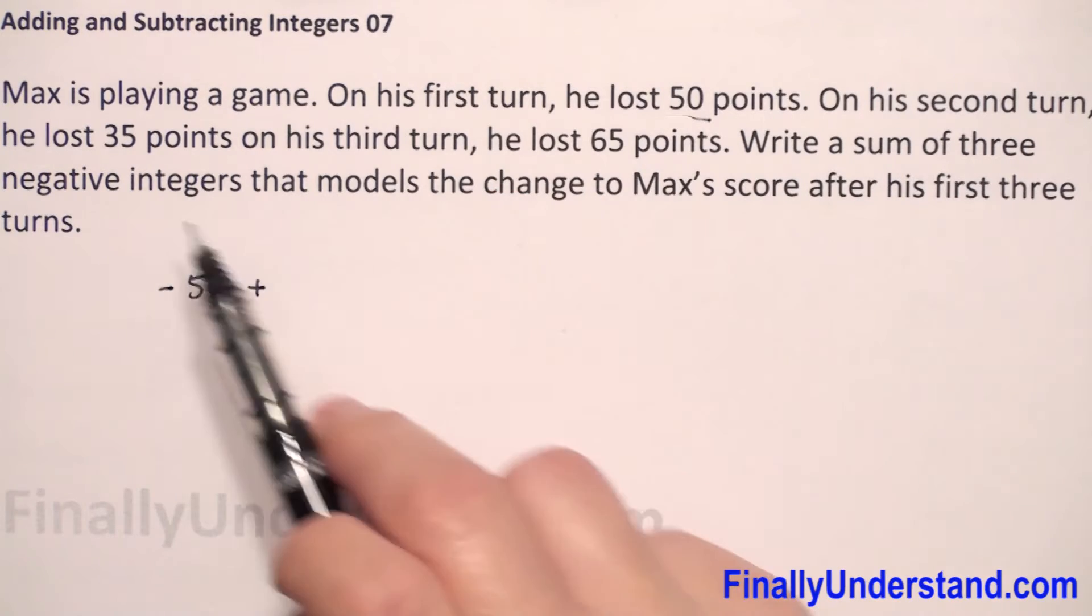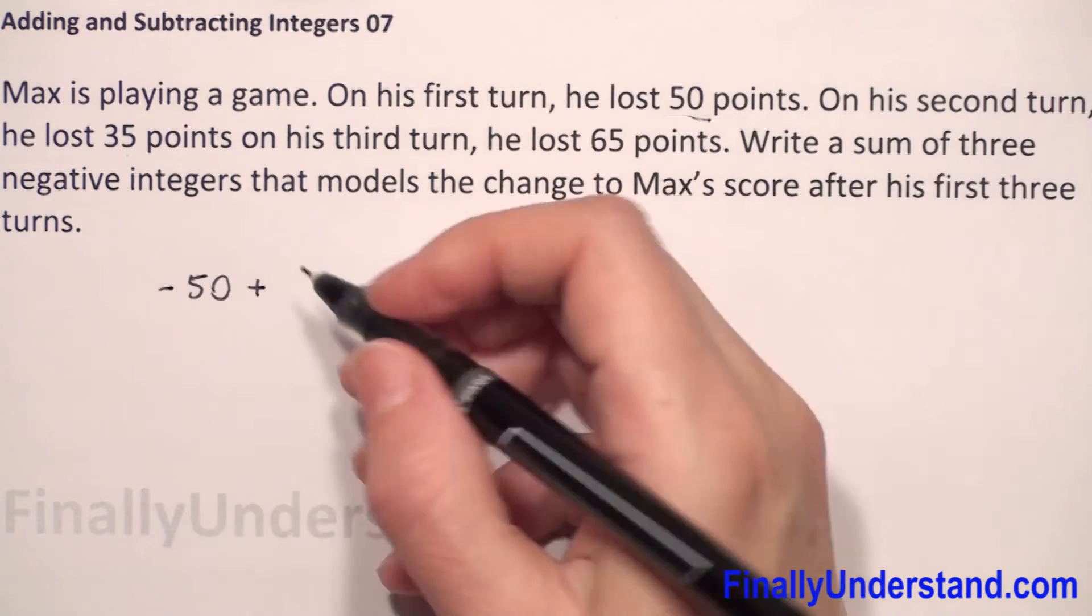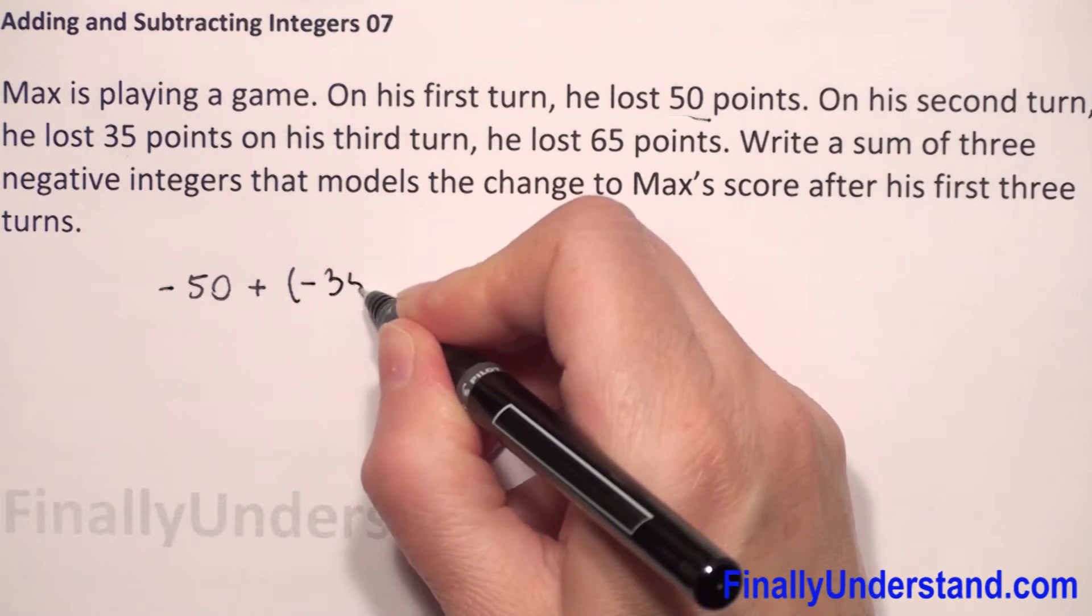Next he lost 35 points. So we have plus negative 35.